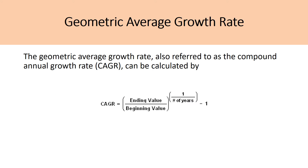To cover the formulas: for the geometric average growth rate, it's also referred to as the compound annual growth rate, and that's what a lot of financial sources use. The formula is relatively simple: you take your ending value, divide it by your beginning value, raise it to the power of 1 over n (the number of years), and then subtract 1 from that.